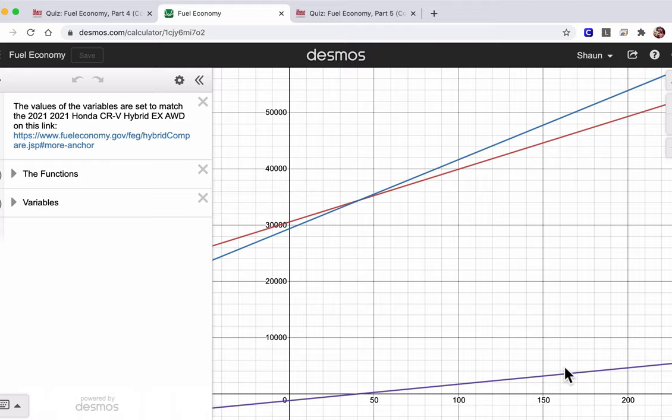And down here, this purple line measures the cost savings via the hybrid over time. It's negative in the beginning because in the beginning, the hybrid's more. But it's zero when they're equal and positive. You get a positive savings with the hybrid after you reach the point where they're equal.